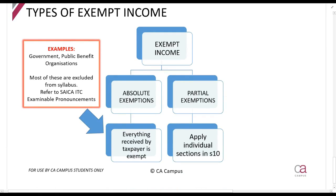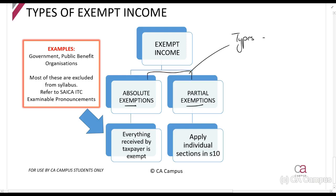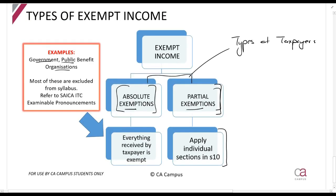Be aware that you get two types of exempt income: absolute exemptions and partial exemptions — though these names aren't necessarily ideal. They are not talking about the type of income; they are talking about the types of taxpayers. Absolute exemptions apply to taxpayers where everything is exempt, such as the government and public benefit organizations. Please refer to your prescribed material for analysis as most of this is excluded from your syllabus. Partial exemptions apply to the majority of companies and individuals, where some income is taxed and only some is exempt — and that is where the majority of our studies in this section will come from.